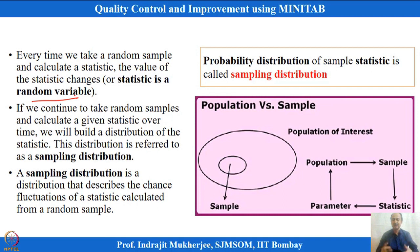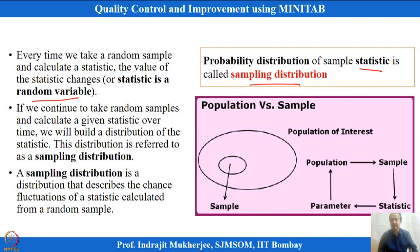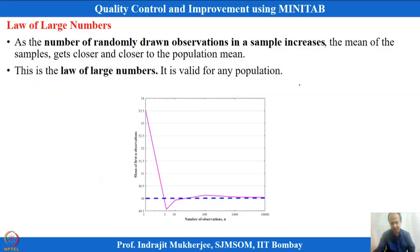Any other distribution can be considered. This statistic can follow a certain sampling distribution. The probability distribution of a statistic is known as a sampling distribution, because every time I take samples and calculate x-bar, x-bar will follow a certain distribution.